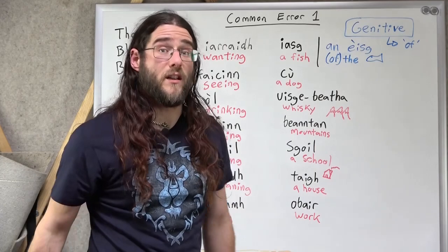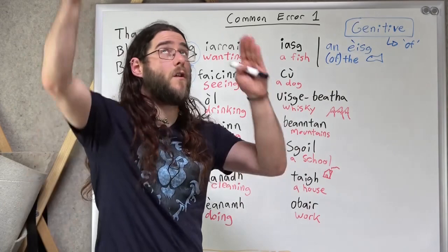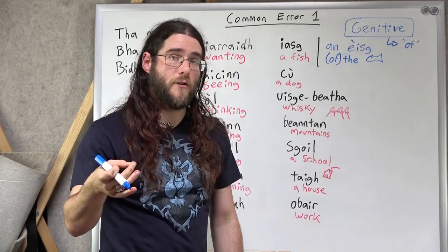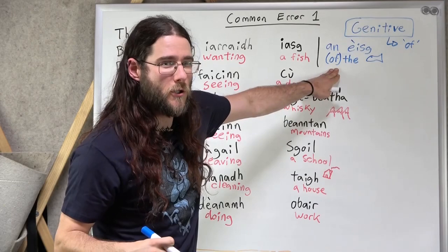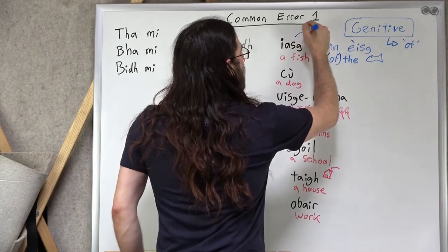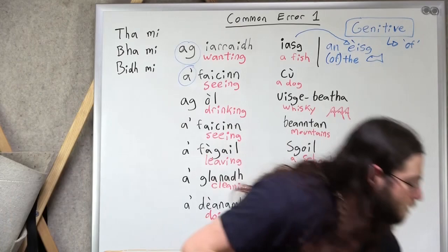Wanting the fish. Ag iarraidh an èisg. Bha mi ag iarraidh an èisg. I want the fish. Tha'n cat clèibheach ag iarraidh an èisg. Wants the fish. Because we're saying of the fish. We're saying of the fish here. So, it changes to èisg. Iasg becomes èisg.